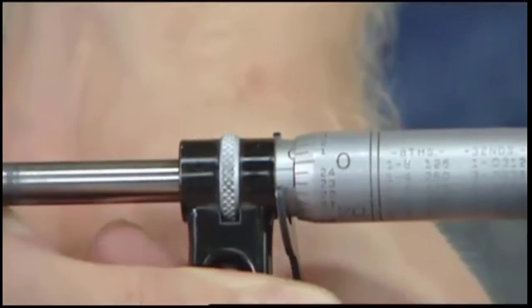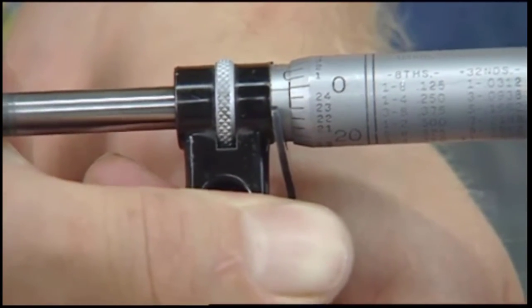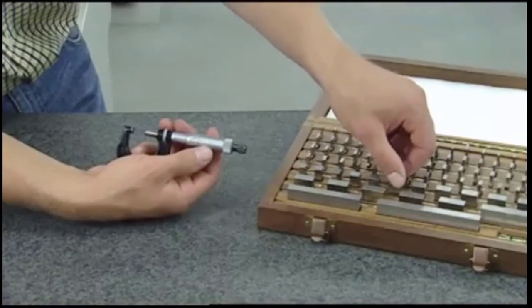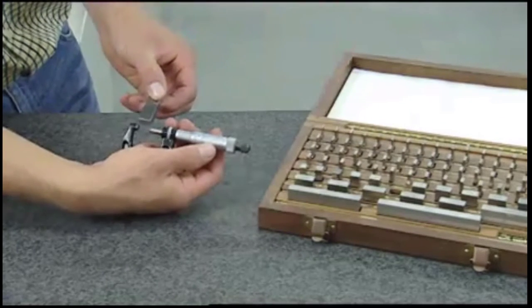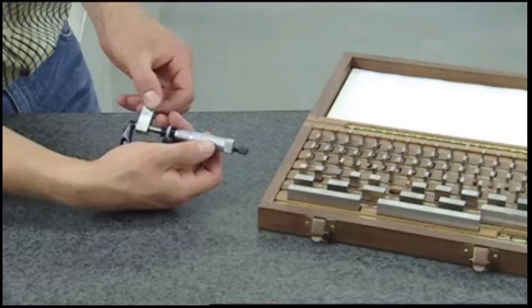To adjust the zero mark, use a micrometer spanner wrench and rotate the sleeve until it's aligned. Once the zero mark has been aligned, check the micrometer at various measurement positions using gauge blocks.